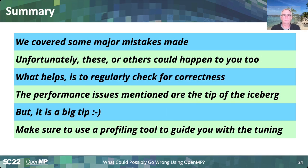In summary, I covered some major mistakes I've seen throughout the years. These or others could happen to you too, and I hope you found this useful. One important thing: have regular checks for correctness. Make sure you have validated data sets and check for correct results often. Don't develop your OpenMP application for two weeks only to find out you have a wrong result. You can add OpenMP in a gradual way and regularly check that you didn't make a mistake. The performance issues are just the tip of the iceberg. Always use a profiling tool to guide your tuning so you know where to spend your time.